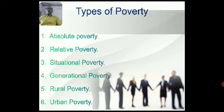Rural Poverty occurs in rural areas with a population below 50,000. These are areas with fewer job opportunities, less access to services, less support for disability, and lower quality education opportunities. People tend to live mostly on farming and other manual work available in the surroundings.